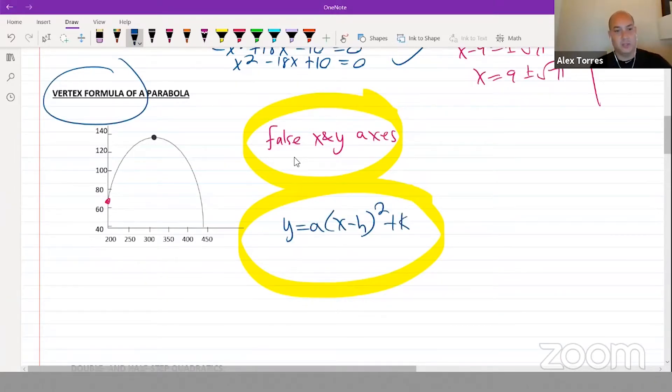So they'll give you something like this and they'll ask you which of the following looks like it could be the equation. Well, first of all, it's an upside down parabola. So we know that this number here has to be negative. That's one very important thing.